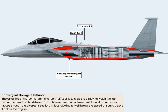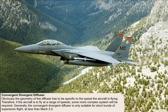The objective of the convergent-divergent diffuser is to slow the airflow to Mach 1 just before the throat of the diffuser. The subsonic flow thus obtained will then slow further as it moves through the divergent section, in fact slowing to well below the speed of sound before it enters the engine. Obviously, the geometry of the diffuser has to be specific to the speed the aircraft is flying. Therefore, if the aircraft is to fly at a range of speeds, some more complex system will be required.